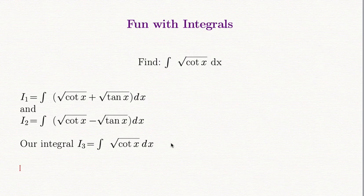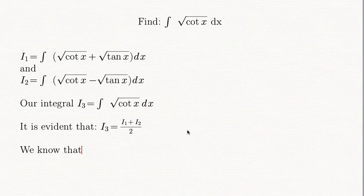So therefore what is evident is that i3 is equal to i1 plus i2 by 2. And we know what i1 and i2 are. We know from the earlier results, the earlier two videos.